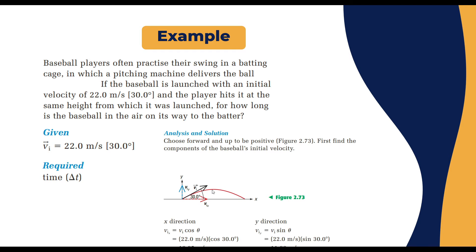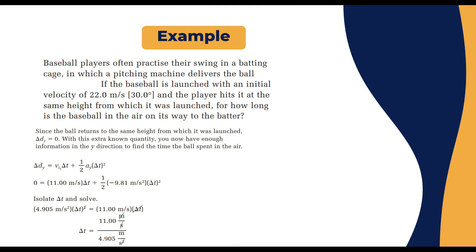We find the components of the initial velocity. For the x-direction: v_ix = v_i × cos(θ) = 22 × cos(30°) = 19.05 m/s. For the y-direction: v_iy = v_i × sin(θ) = 22 × sin(30°) = 11 m/s. Since the ball returns to the same height from which it was launched, delta dy equals zero.